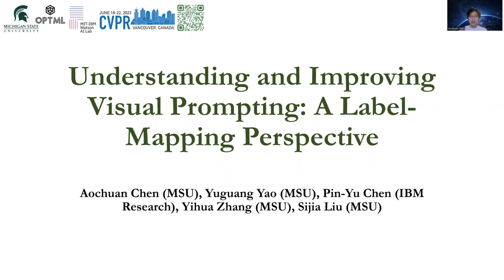In this work, we peer into the label mapping stage in visual prompting. Label mapping is a main building block in visual prompting for transfer learning. However, existing work hardly investigates this stage. We propose iterative label mapping through the lens of bi-level optimization, improving both the accuracy and interpretability of visual prompting. We conduct experiments in vision-only models and vision-language models, showing the broad horizon of our method.